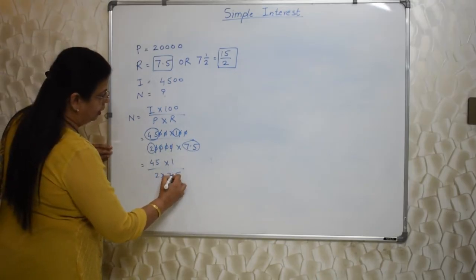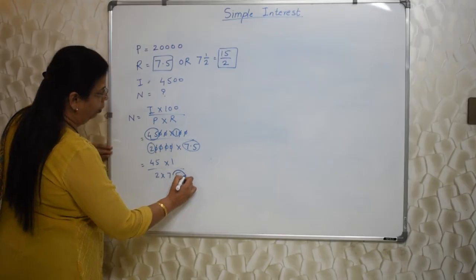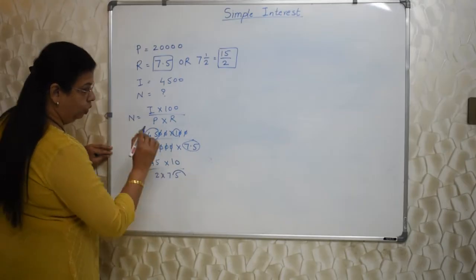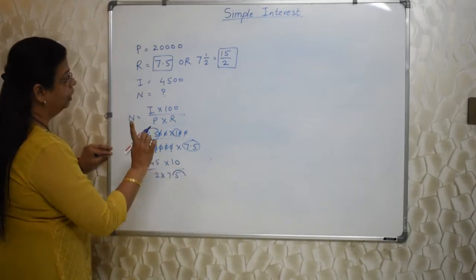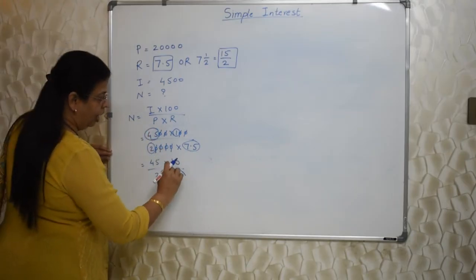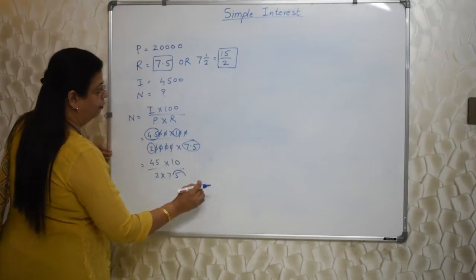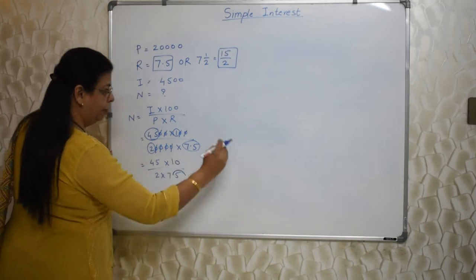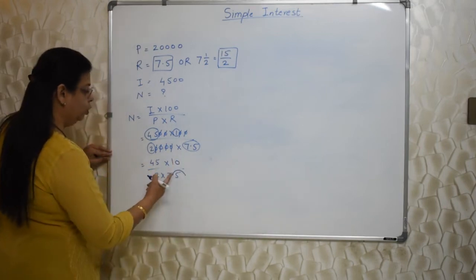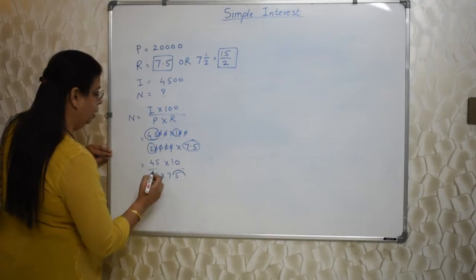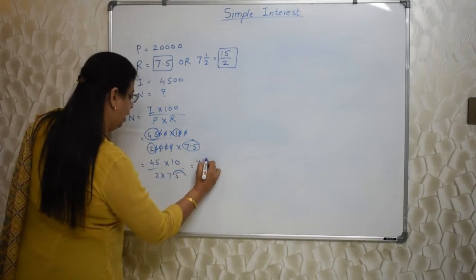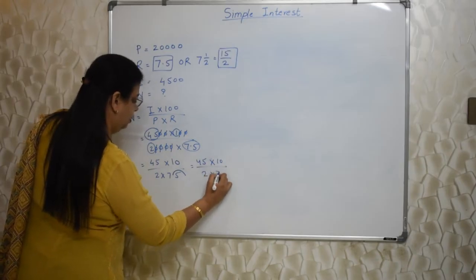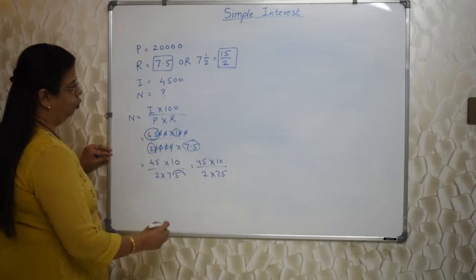So I am shifting this decimal to the right side by one place. So I am adding zero here. So the value of this entire equation doesn't change. Whenever I shift the decimal to the right side, I have to add zero. If I am shifting it by only one place, one zero. If I am shifting by two places, then two zeros. So you are only one place, so one zero. Now let's do it. I am again rewriting it so that you don't get confused. Now it will look like this. Let's do it.